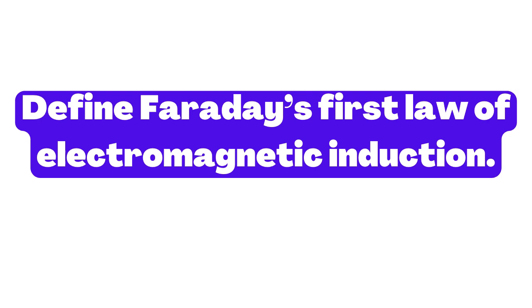This law is often written mathematically as: Induced EMF equals minus n dφ by dt, where n is the number of turns in the circuit and dφ by dt is the time rate of change of the magnetic flux.